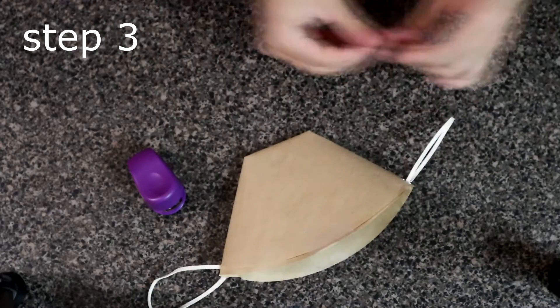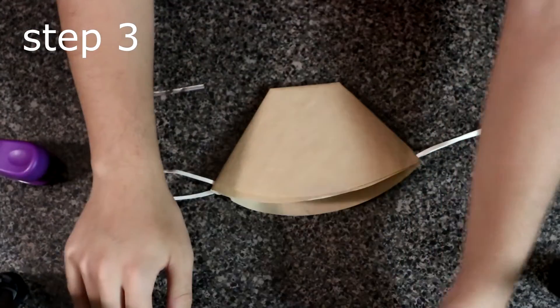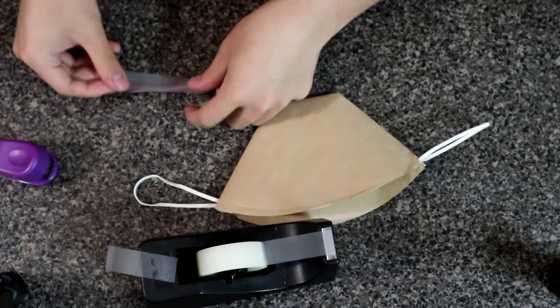After you're done with that, you take the bendable wire, put some tape over it, and then place it on top of the coffee filter.